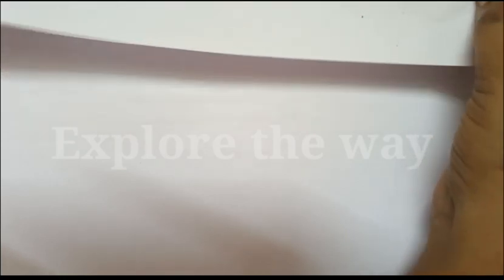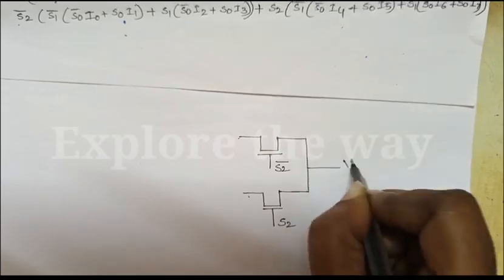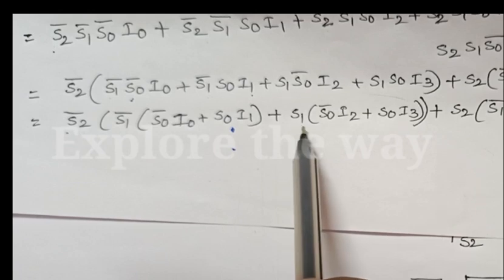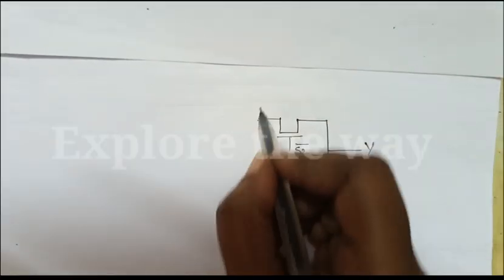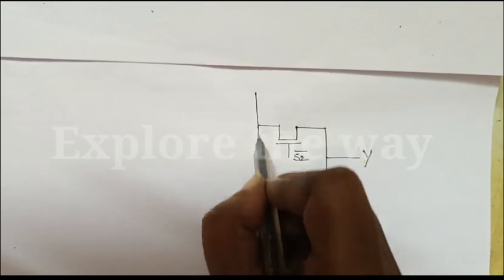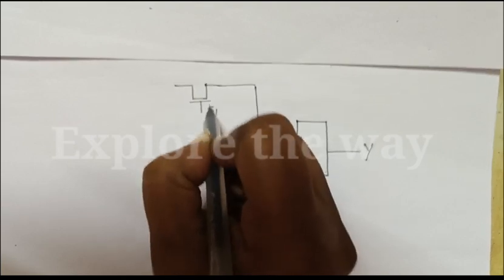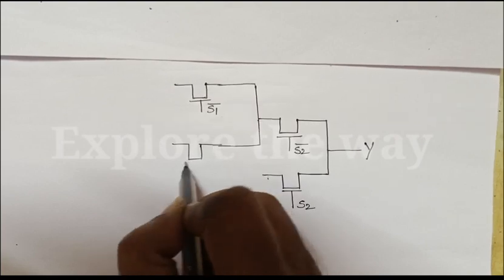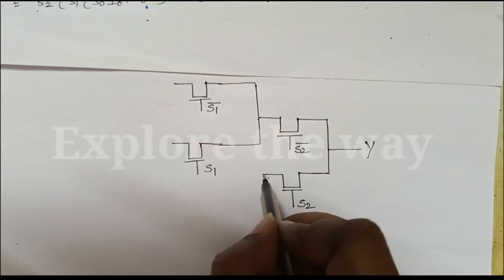Now let us start from S2. Next, when S1 is 0 this path will be active, and when S1 is 1 this path will be active. So again we will take S1. From S2-bar, here we will take two paths: one for S1-bar and another one for S1. Similarly for the second branch as well.